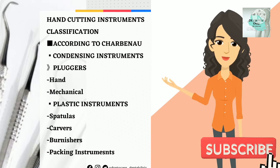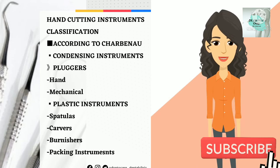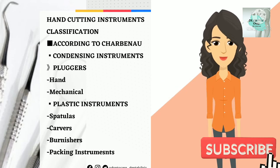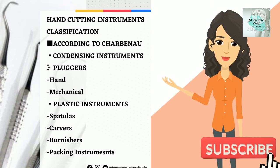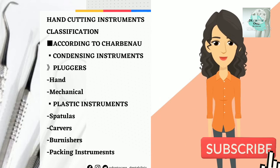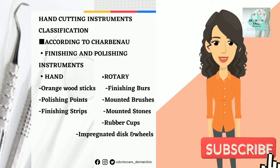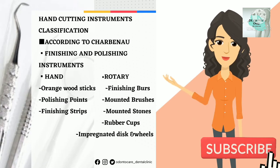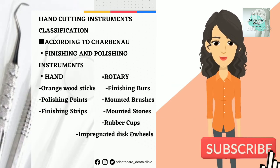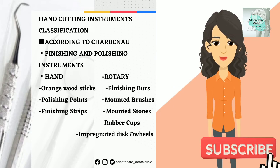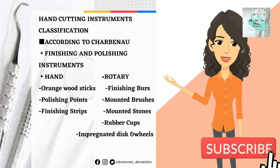Number 2: Condensing instruments — pluggers, hand and mechanical. Number 3: Plastic instruments — spatulas, carvers, burnishes, and packing instruments. Number 4: Finishing and polishing instruments — under hand: orangewood sticks, polishing points, and finishing strips.